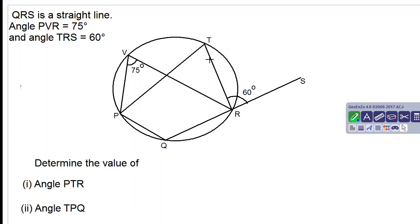Good day everyone. Let's look at the circle theorems question. We have a diagram with information on it. QRS is a straight line. Angle PVR is 75 degrees as shown and angle TRS is 60 degrees as shown.